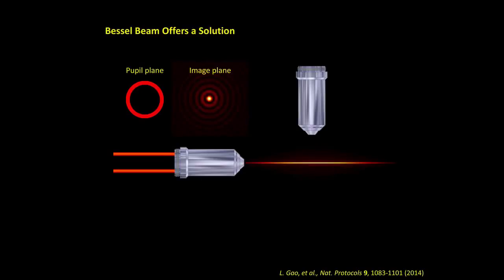This is why we first developed Bessel beam microscopy. Comparing Gaussian, Bessel, and two-photon Bessel: the Gaussian beam is long but fat, so axial resolution is not as good. The Bessel beam is longer and thinner, giving better optical sectioning. However, the Bessel beam has a problem: many concentric rings around the central lobe, which cause background fluorescence in the image.